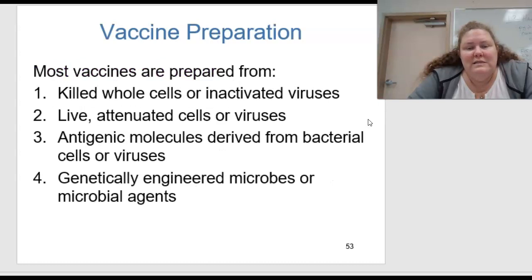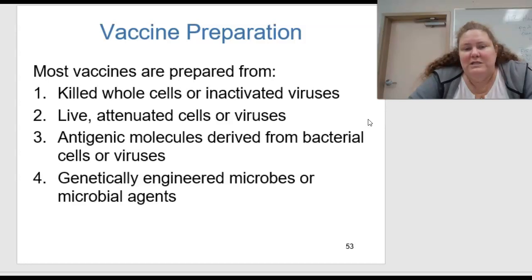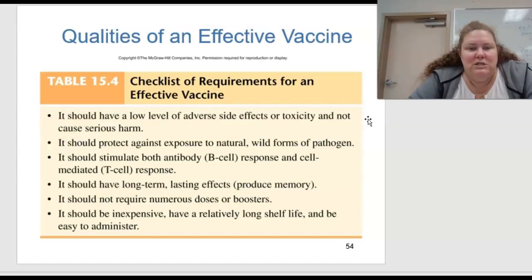Most vaccines are prepared from killed whole cells or inactivated viruses. They can also be live attenuated cells or viruses, antigenic molecules derived from bacterial cells or viruses, or genetically engineered microbes or microbial agents.